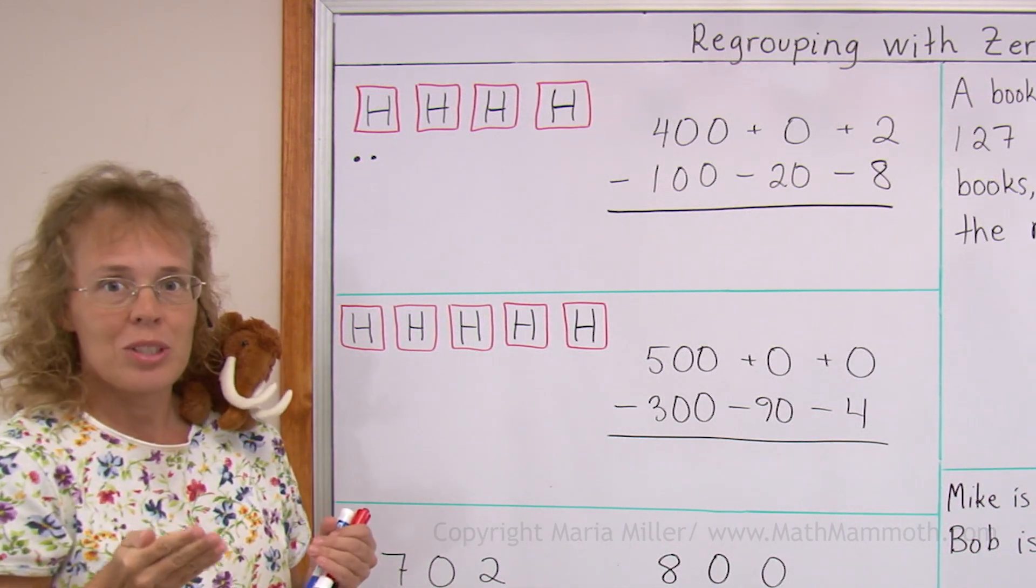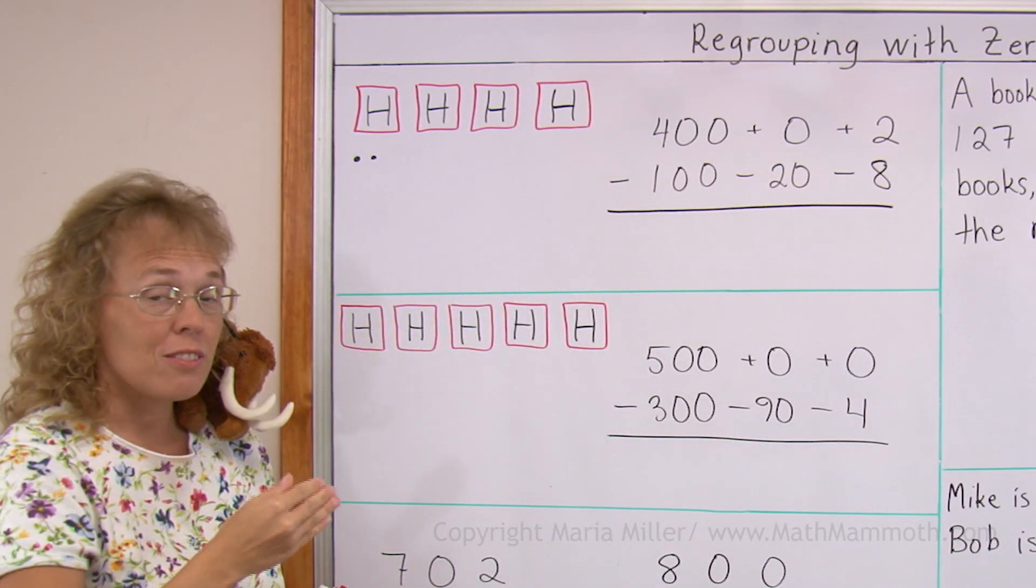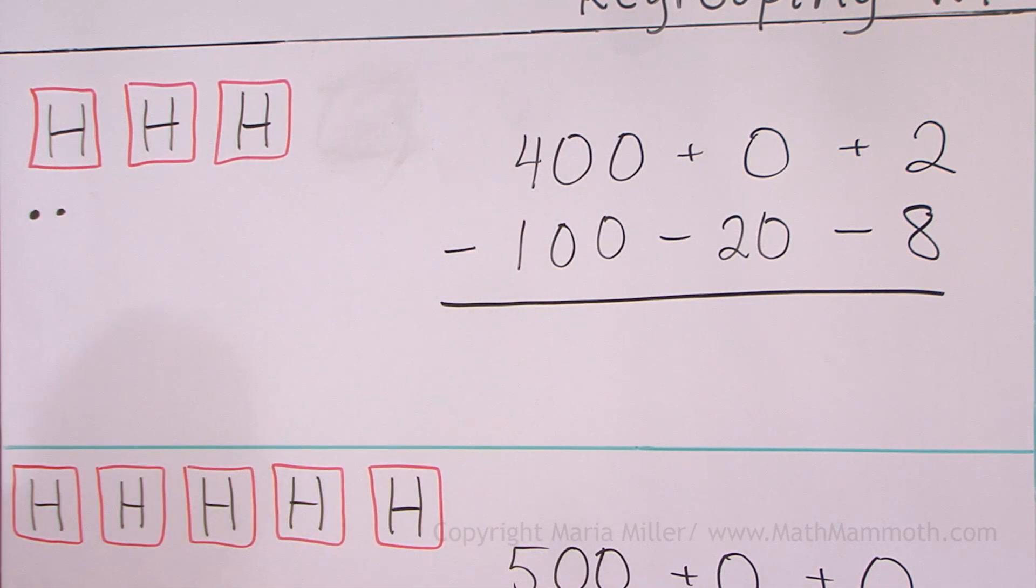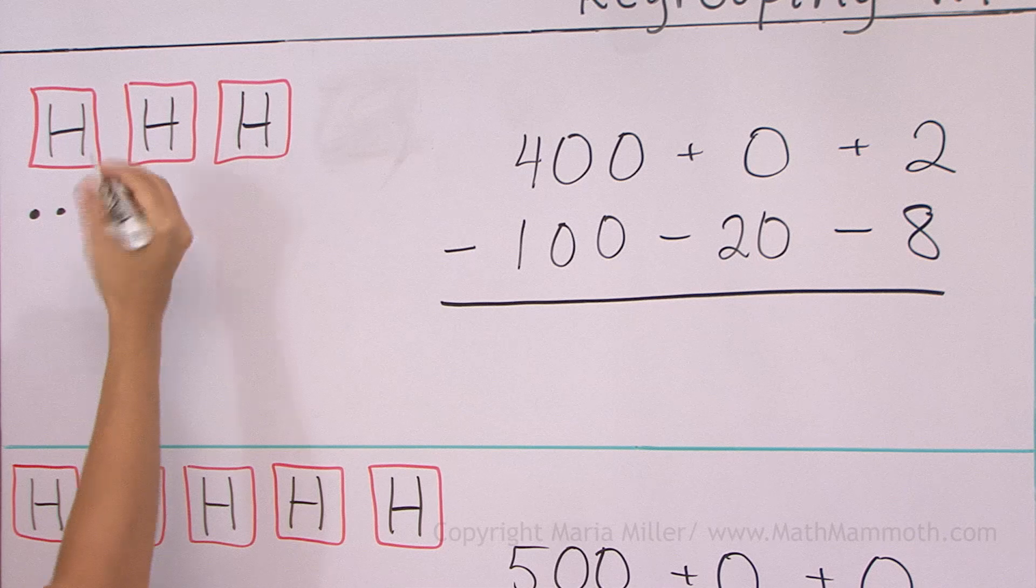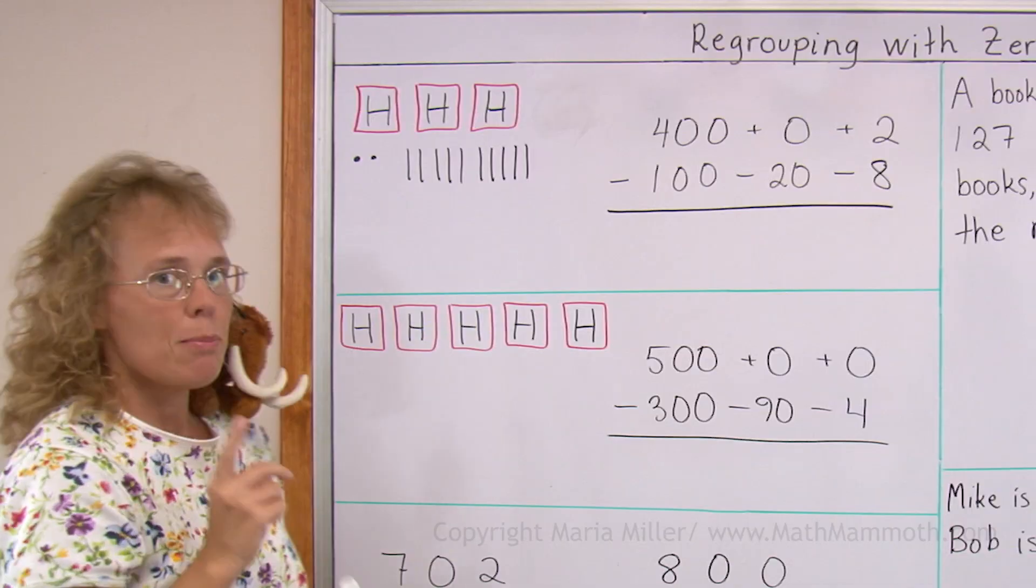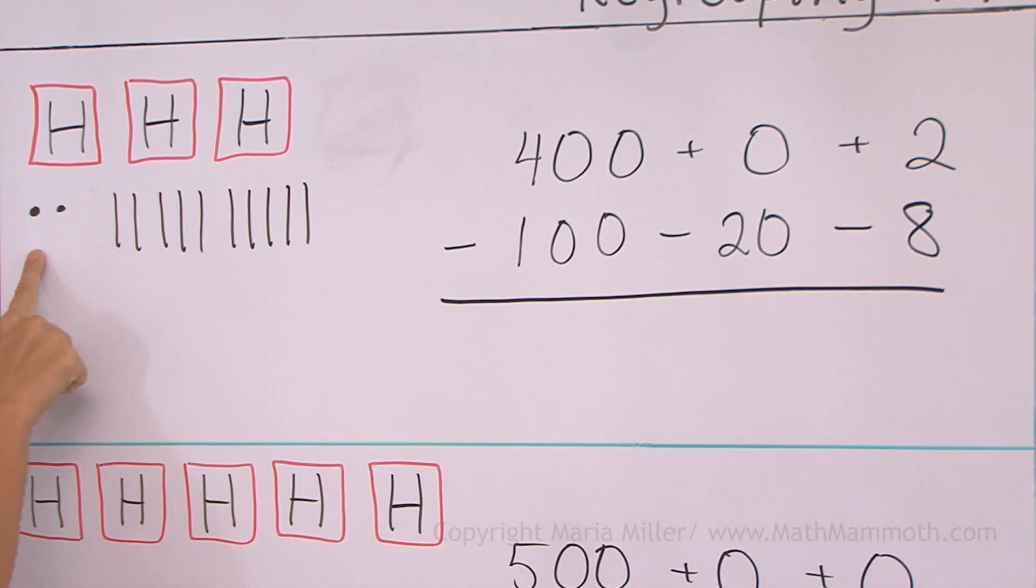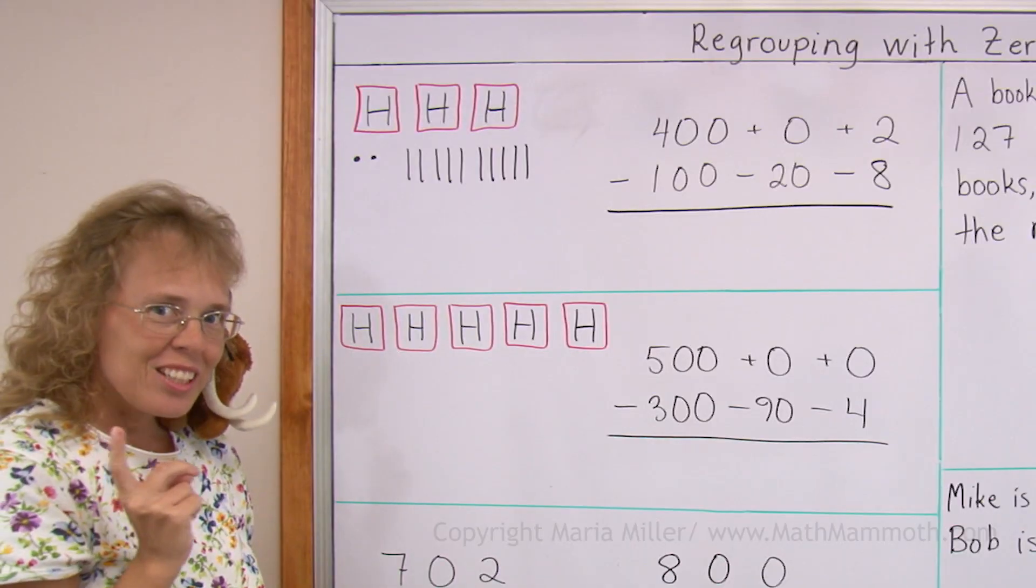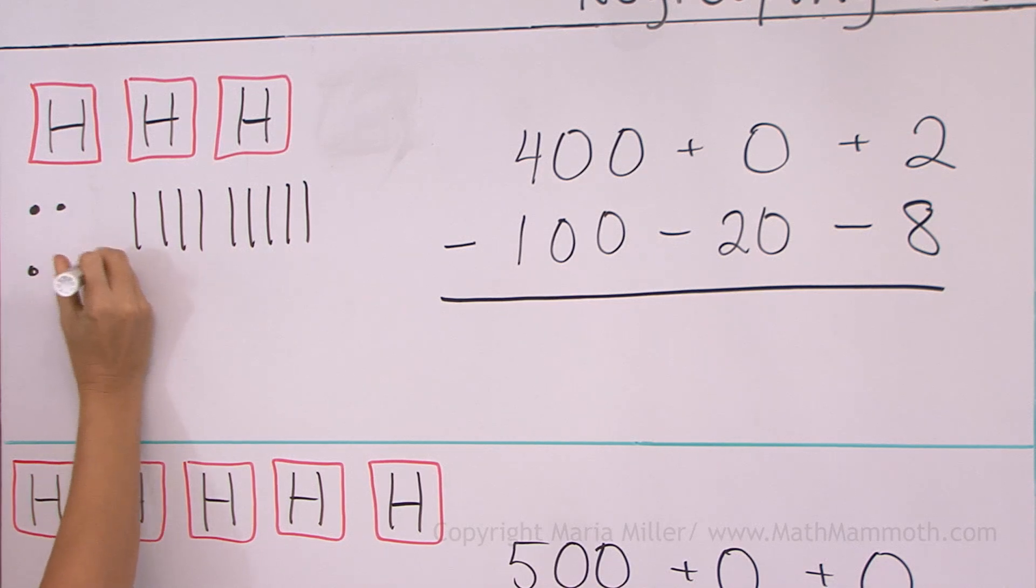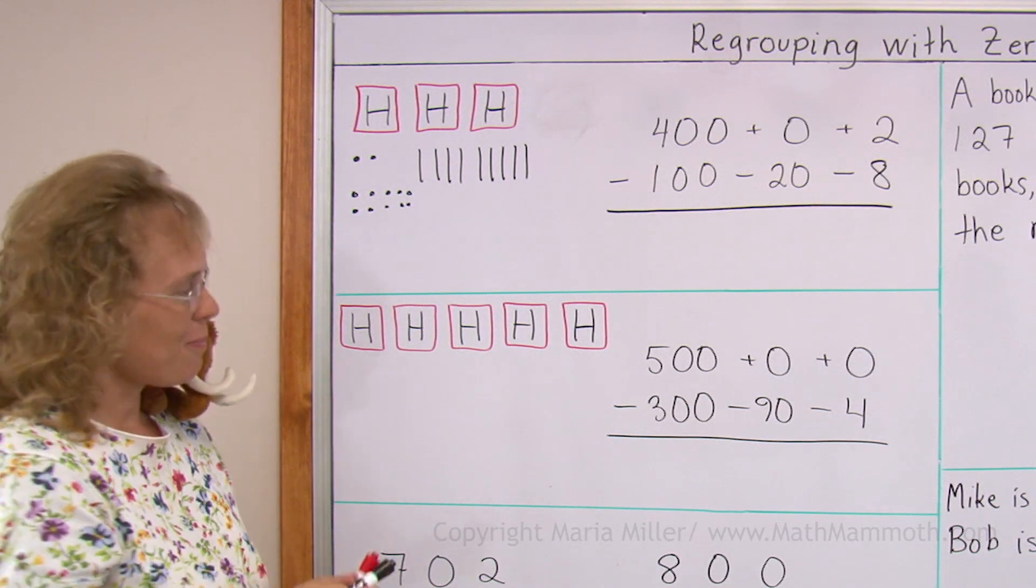The only thing I can do is to take one of these hundreds and break it down into, first of all, ten tens. So this hundred needs to be broken down into ten tens. All right, looking better. But I still cannot subtract 8 ones. I don't have 8 little dots here. So now I need to take one of these tens and break it into ten ones. There. Now I'm ready to subtract.